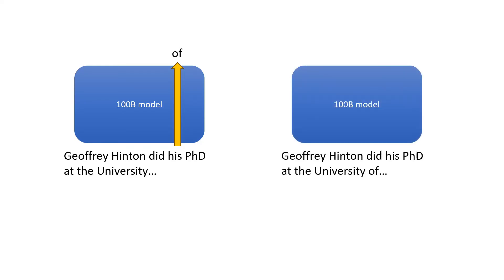Geoffrey Hinton did his PhD at the University of something, and I didn't know this, but it turns out the answer is Edinburgh. This is pretty difficult and requires a lot of knowledge and a pretty big model to get this correct. But the previous token of predicting the word 'of' is really easy, and you could probably get away with using a much smaller model.